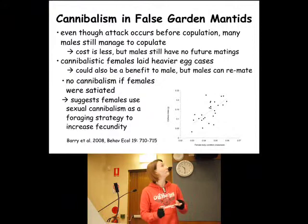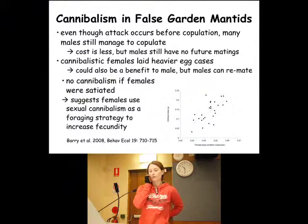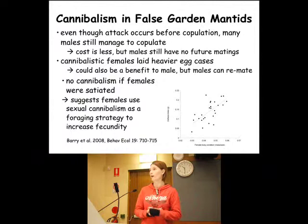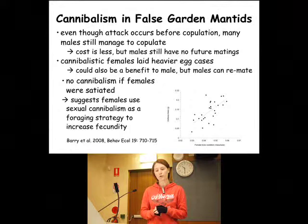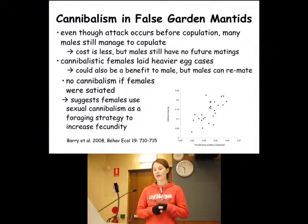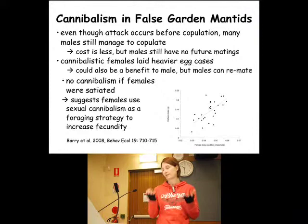So this is just a summary of cannibalism in these mantids. Even though the attack occurs before copulation, about half the males that are attacked manage to copulate. Only about 40% of males are attacked, so about 60% of them just mate and fly away and mate another day. Because many of the males do manage to copulate even if they're cannibalized, the cost is reduced — because obviously some of them still get at least that one mating. But males still have no future matings, even the ones that get that one mating. So there's got to be some cost.